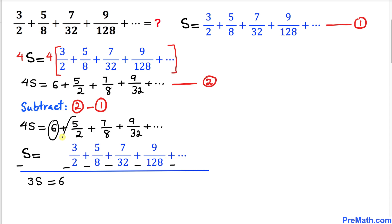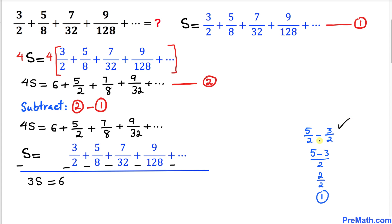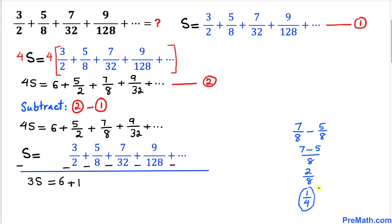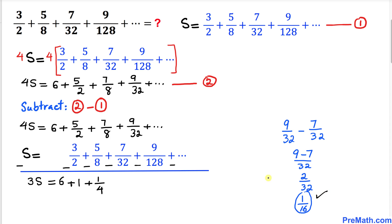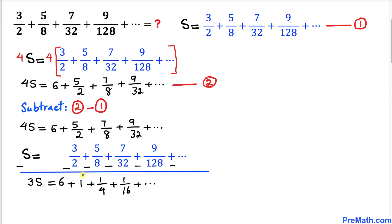So 3s equals 6, and then we simplify: 5 over 2 minus 3 over 2 gives plus 1. Then 7 over 8 minus 5 over 8 simplifies to 1 over 4, so we write plus 1 over 4. Next, 9 over 32 minus 7 over 32 simplifies to 1 over 16, so we write plus 1 over 16, and then it goes on and on.